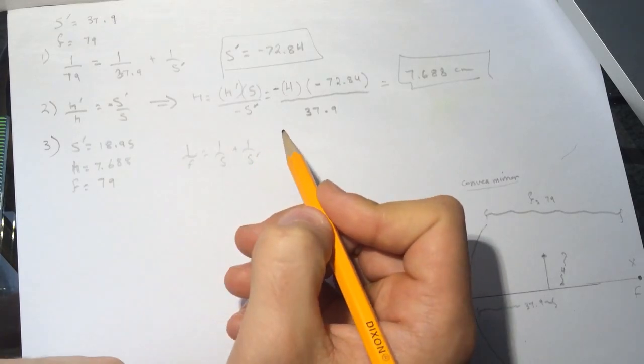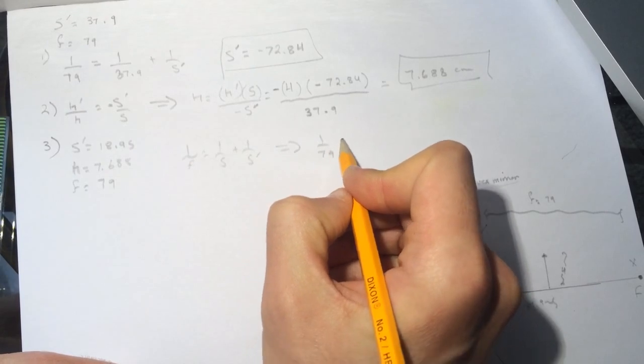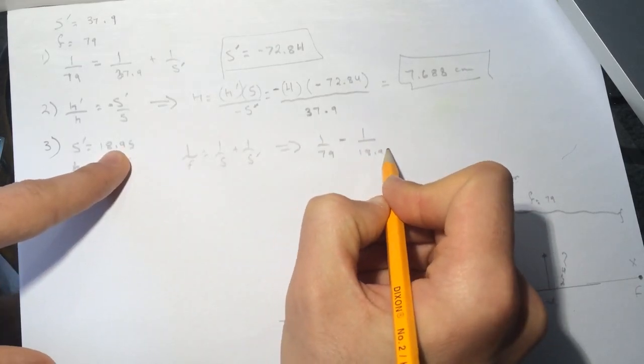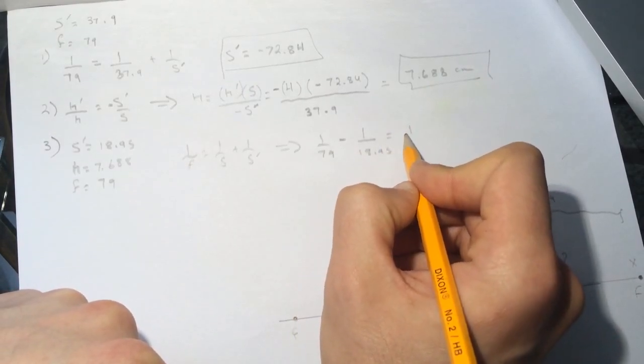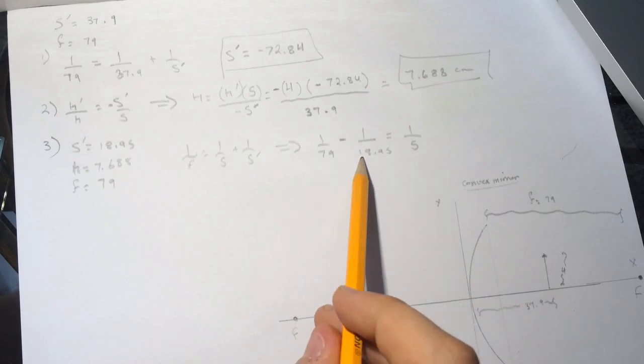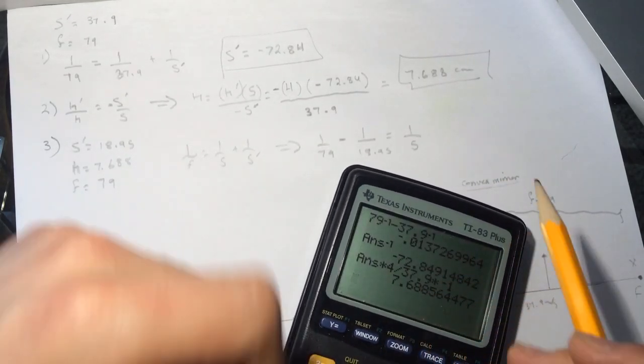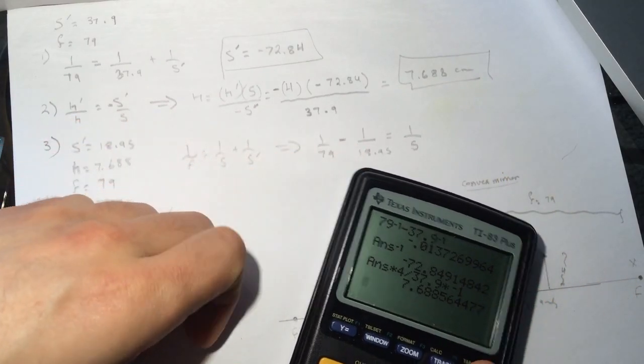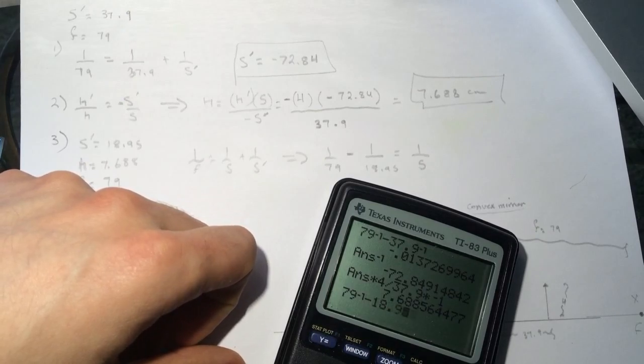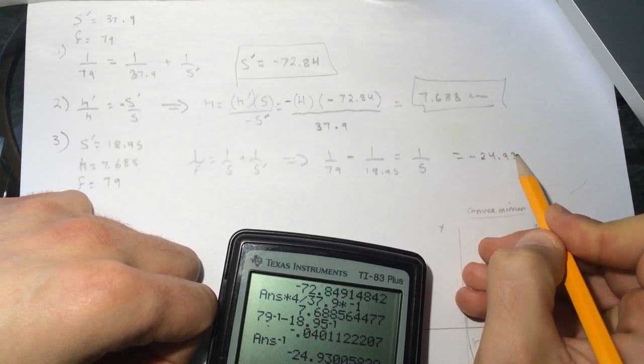So 1 over 79 and then we got the S prime which is minus 1 over 18.95 is equal to 1 over the S, because that's what we're looking for. We're looking at the object where the object will be if we had an image that's 18.95. So you can see that also here we'll get a negative value because this is smaller than this.